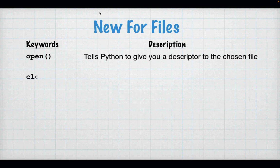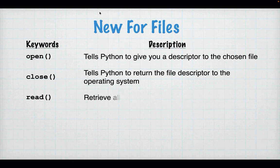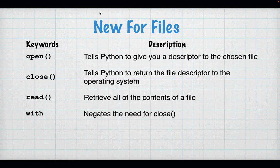We've got some new stuff for files this week. We have a new function called open, a new function called close, read, and a new keyword called with. Open does just what it says — it opens a file and gets you a file descriptor. Close returns that file descriptor to the system. Read is what gets the stuff out of the file. And with negates the need for close, because if you have an open, you have to have a close.